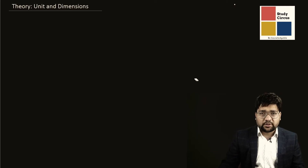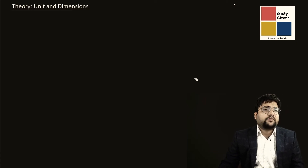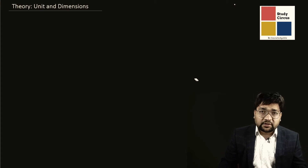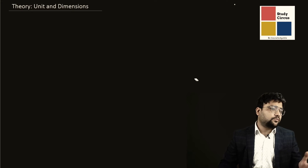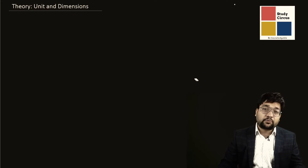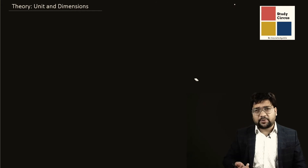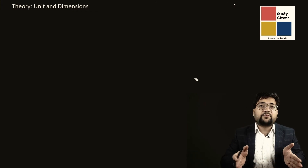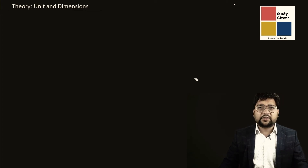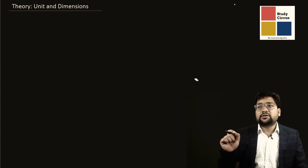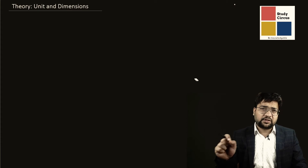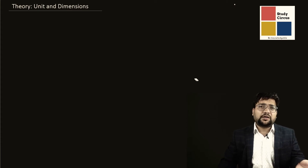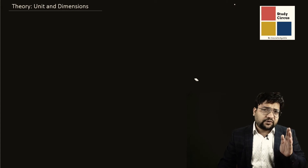In physics, we see a lot of different things — something is very heavy, something is light, some things move very fast, some things move slowly. The sun is very bright, a candle is not so bright. There are many aspects of different physical happenings. So how do you exactly say what brightness is, or what heaviness is? These are aspects of physical things, so we have defined different physical quantities.